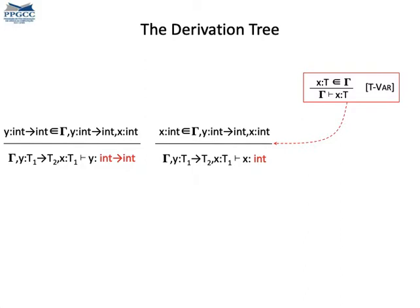We use the same rule to type variable X. This time, X is not a function, it's a scalar, and its type is int. Notice that we are assuming an environment with types for Y and X. Later, we will see how to infer this environment.